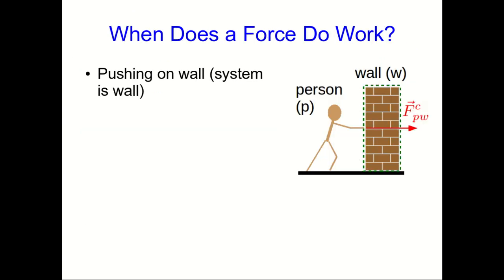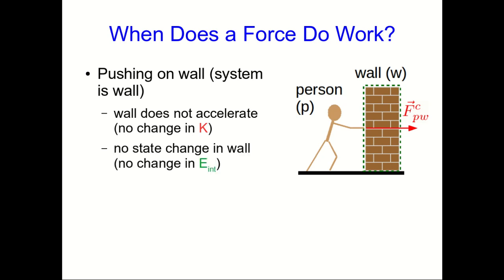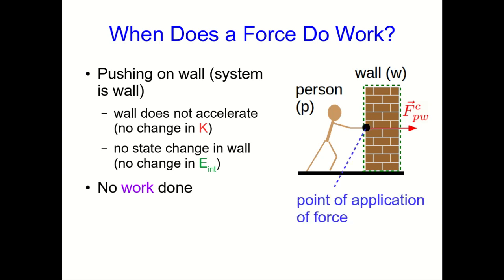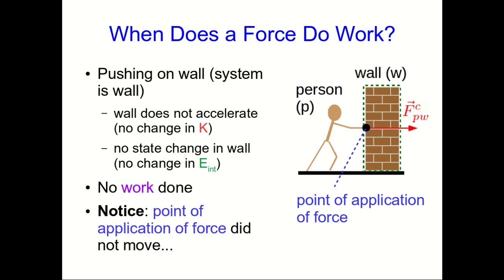We already know that external forces don't always change a system's energy, so let's look at when forces do work. Consider a person pushing on a wall — presumably the wall doesn't accelerate, so its kinetic energy doesn't change, and there's no state change in the wall, so there's no change in internal energy either. No work is being done. One thing to notice is that the point of application of the force, where the person's hand is touching the wall, did not move during this process.